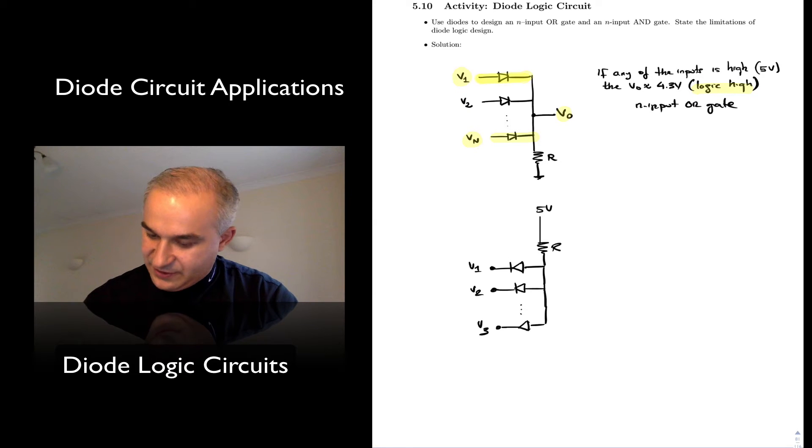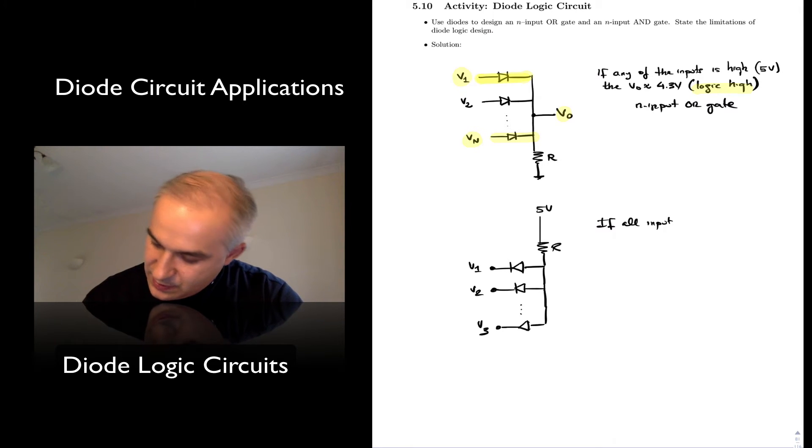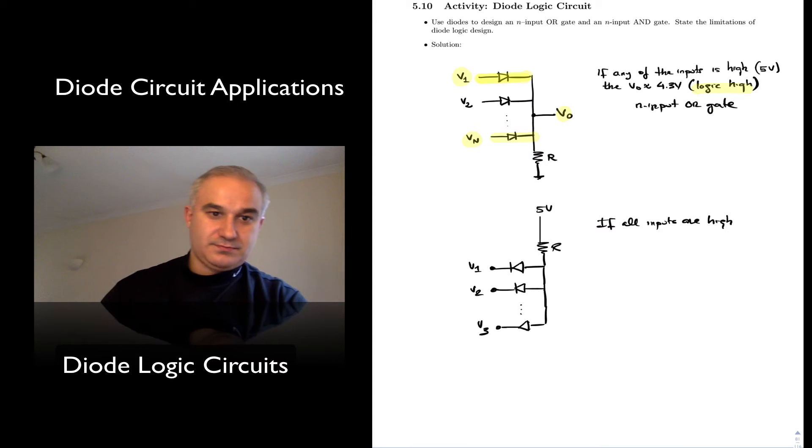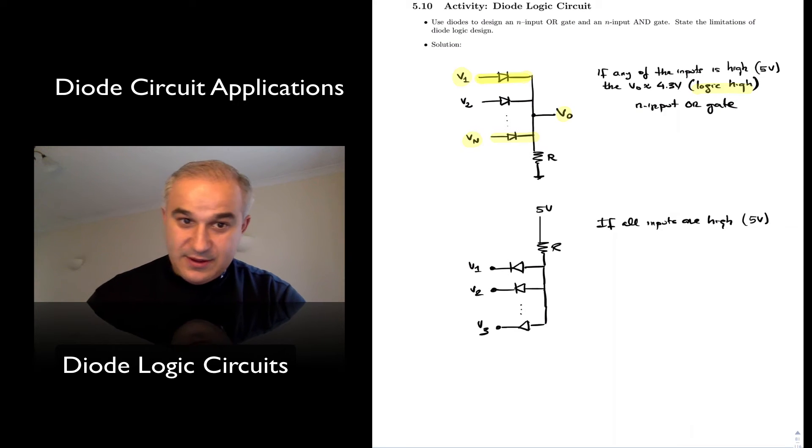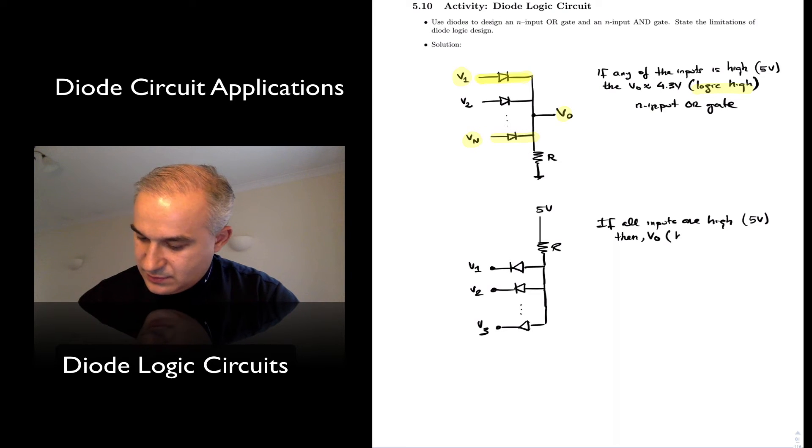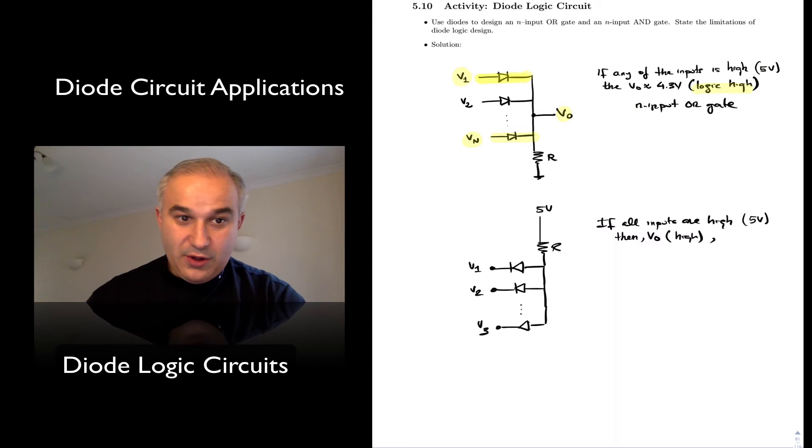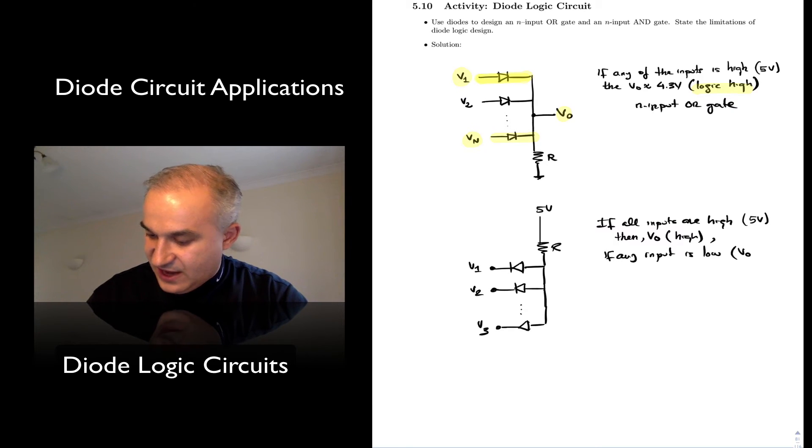So what we have here is that if all inputs are high, around 5V, a logic high, then Vout is high. Otherwise, if any input is low, we get Vout approximately equal to 0.7V.